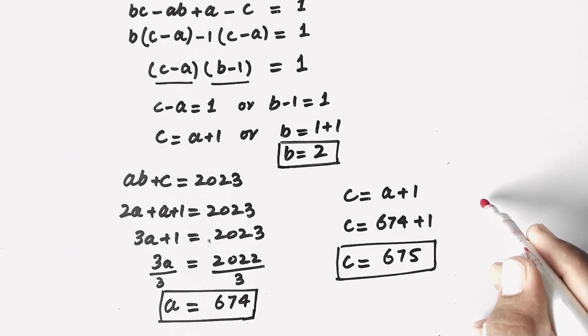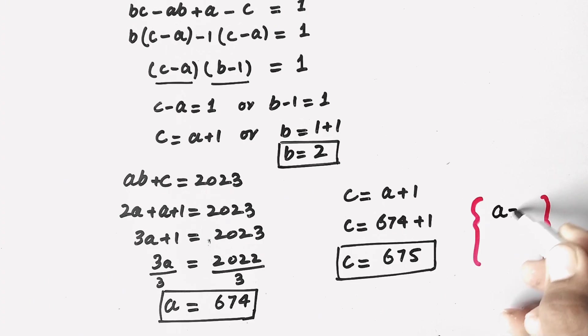So here we will write values of A, B, and C are 674, 2, and 675.